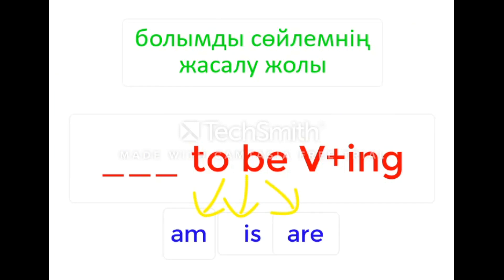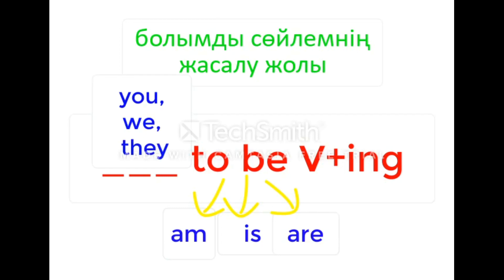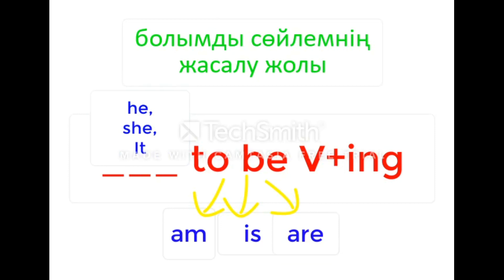If the subject is I, we use 'am'. If the subjects are you or we, we use 'are'. If the subjects are he, she, or it, we use 'is'.